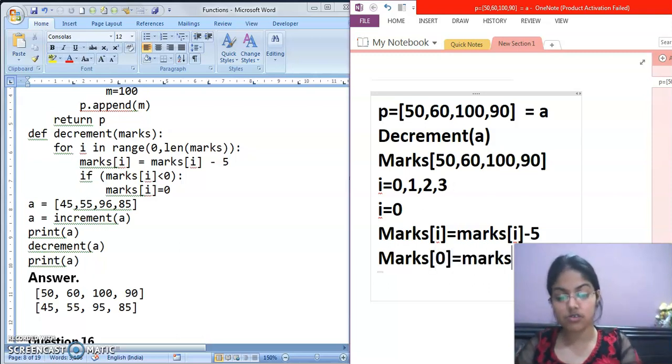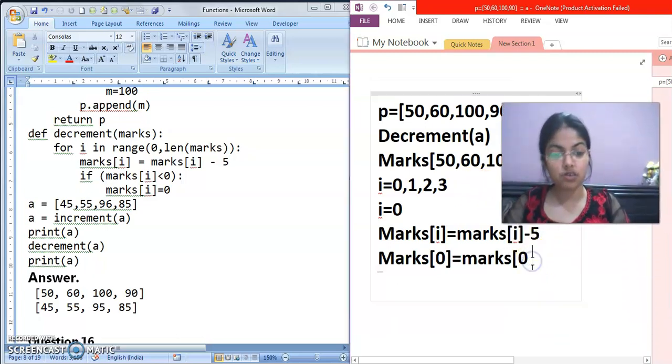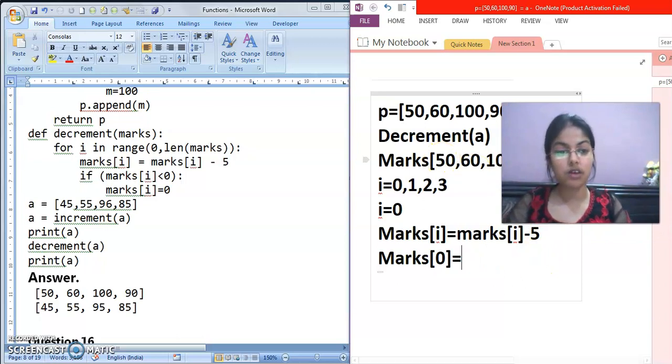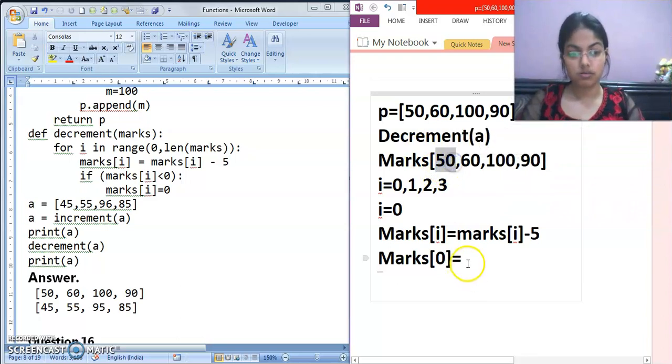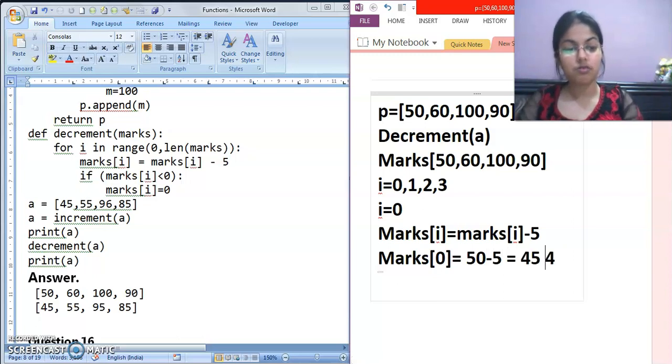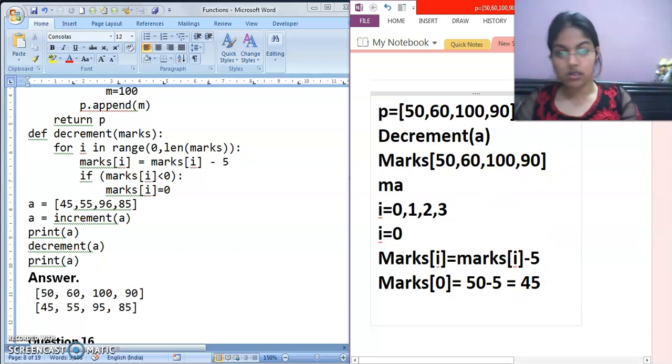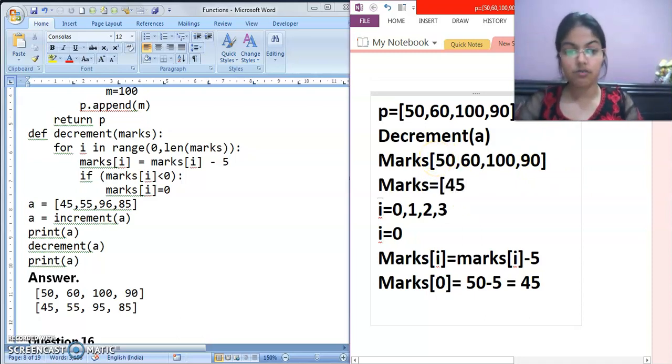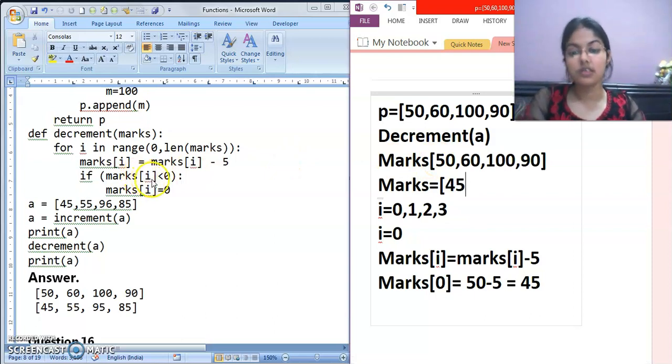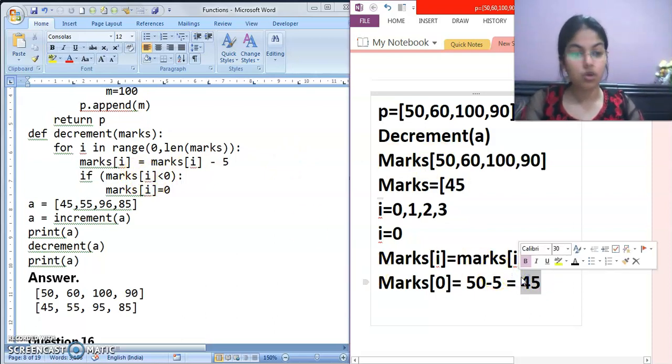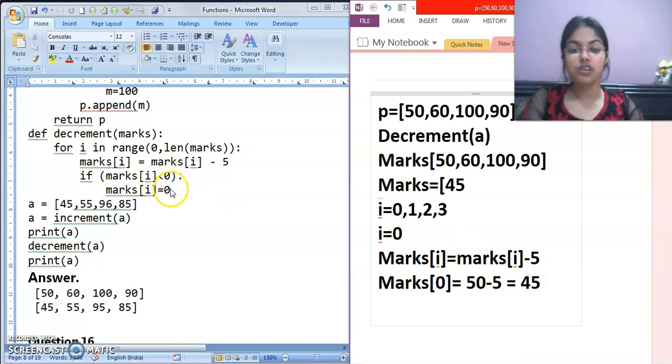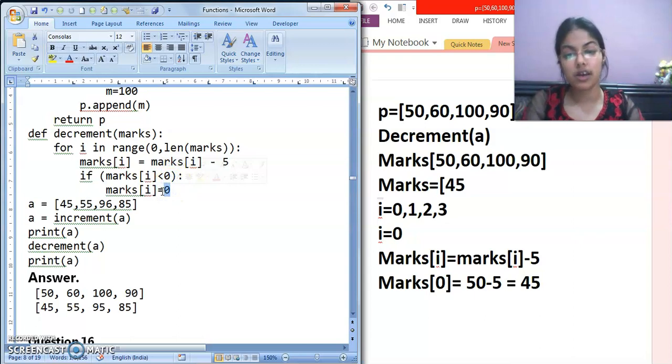Now what to do? Marks I equals to marks I minus five. First time I ki value kya hogi? Zero. Substitute this. Marks zero equals to marks zero minus five. What is the value of I at present? Zero. Marks zero. Now I'm taking direct value. Marks zero position par which value? Fifty. Fifty minus five is forty five. So now in marks list at zero position the value will be forty five. After that marks I less than zero. Is forty five less than zero? No condition is false.